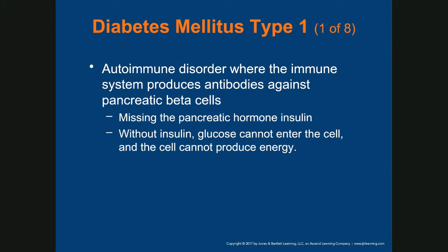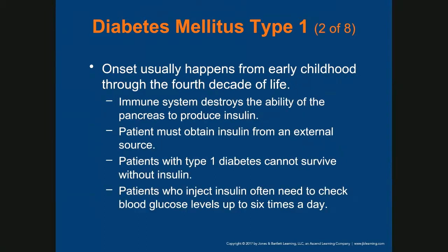Diabetes mellitus type 1 is an autoimmune disorder where the immune system produces antibodies against the pancreatic beta cells — the cells that produce insulin. Without insulin, glucose cannot enter the cell and the cell cannot produce energy. Onset usually occurs from early childhood through the fourth decade of life. The immune system destroys the pancreas's ability to produce insulin, so the patient must obtain insulin from an external source.